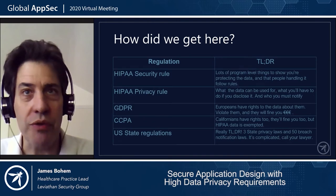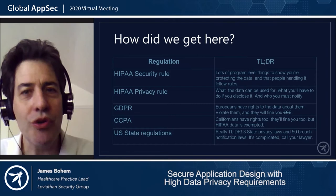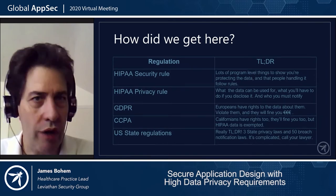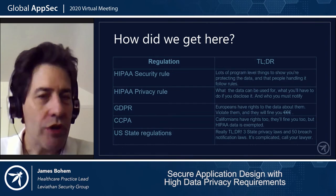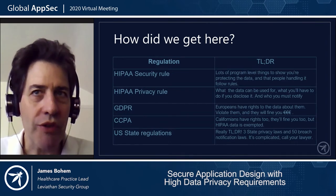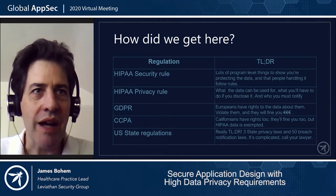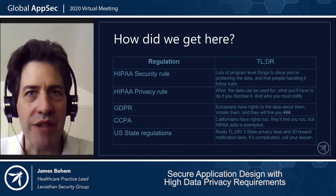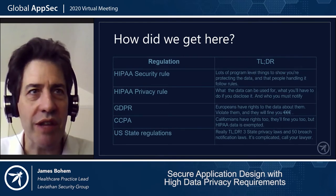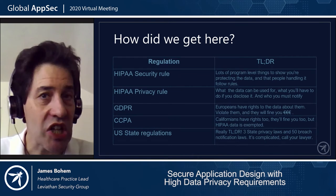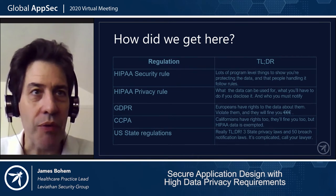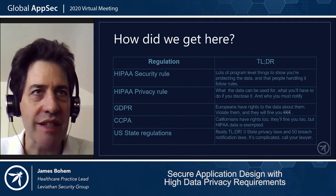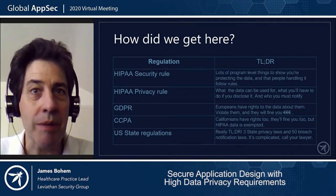The privacy rule also covers what you have to do if you disclose data and who you have to notify that you've done something wrong. GDPR gives Europeans very specific rights about their personal data, and large fines in euros have been issued for violations. CCPA, the California statute, is very similar but pertains to Californians. HIPAA is explicitly excluded from CCPA, so when looking at CCPA plus HIPAA together, HIPAA generally tends to overrule.